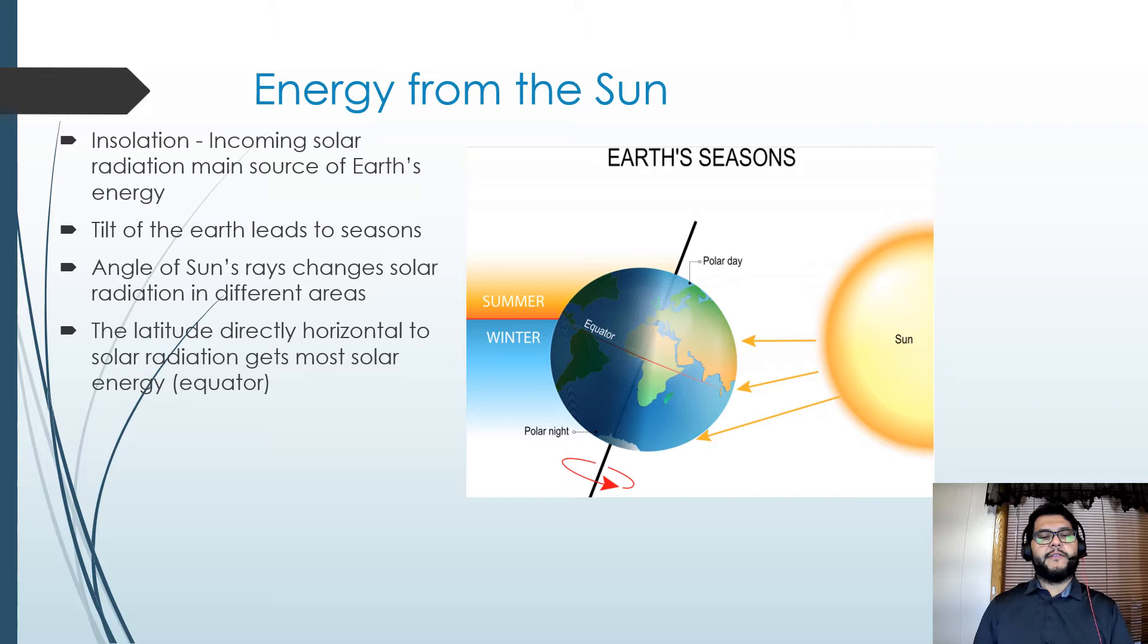So what we call that is something called insolation—that's the incoming solar radiation, which is the main source of all of the energy on Earth. And that tilt leads to those seasons because, as I mentioned, there's going to be uneven solar radiation coming in, and that angle of that radiation is going to affect areas differently. And of course, this is all going to be tied into what latitude you are on the planet.